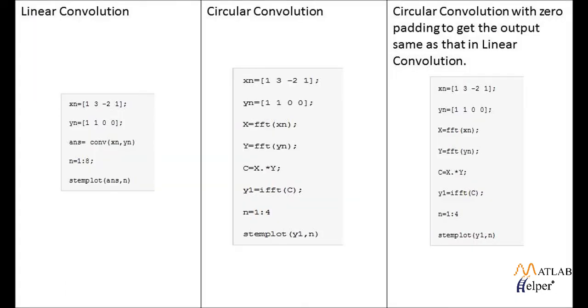Now, you must be thinking, in spite of taking same input sequences, we get two different answers. This is because, in circular convolution, the number of samples in output are same as that in input signal, that is xn and yn.